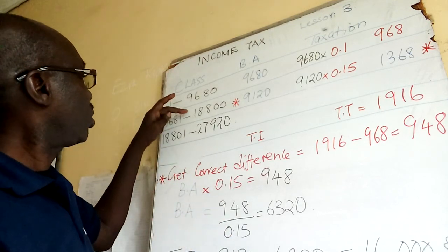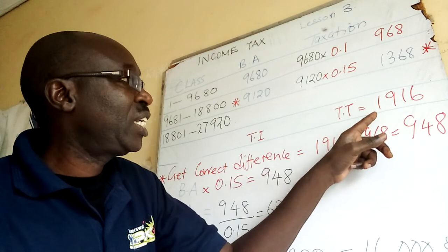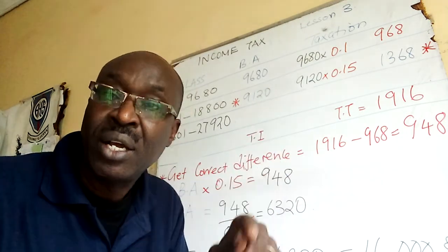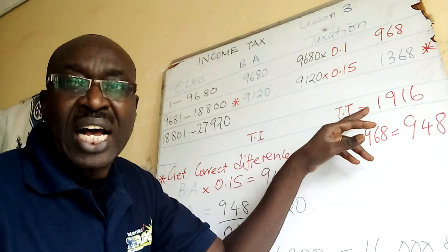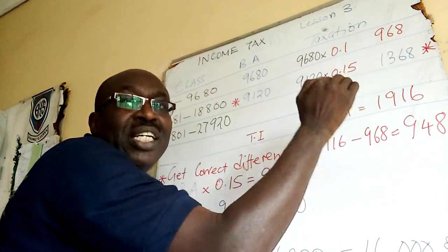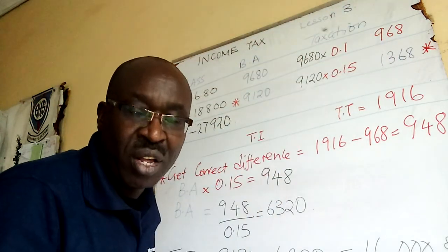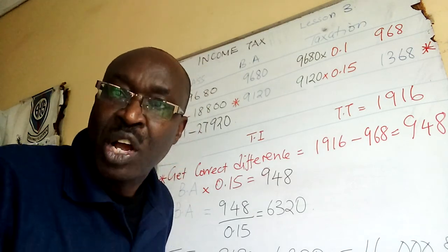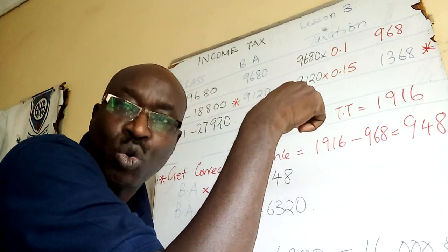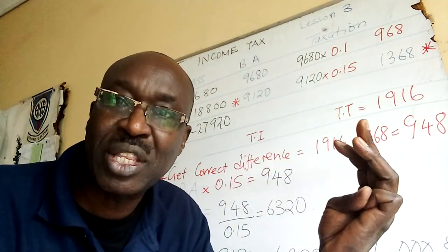There are three classes, so draw up to the fourth line. On the fourth line write total tax = 1,916 — that is what we were given. This total tax came from some taxation above it. There was this line, and this line, and this line — taxation amounts that were put together, because total means addition.